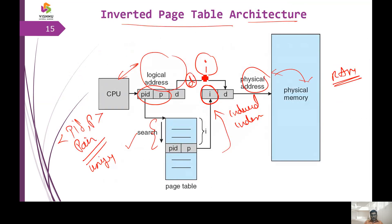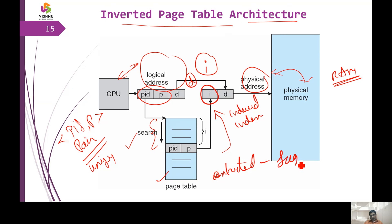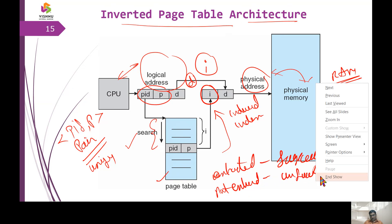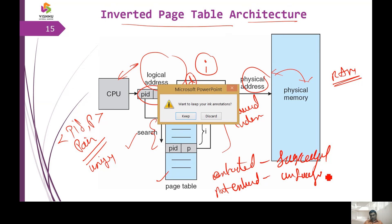The CPU processes the process ID with page p and searches in the page table. If the information is extracted, we call it successful. If it is not extracted, we call it unsuccessful.